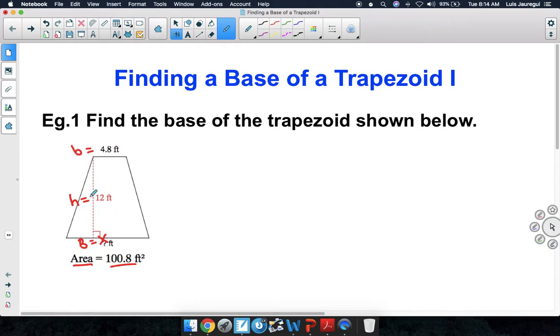Since we're given the little base, the height, and the area, we're going to relate them through the area formula. Given the fact that we're dealing with a trapezoid, we're going to be using the formula area equals 1/2 times the sum of the two bases, big base plus little base, times the height.